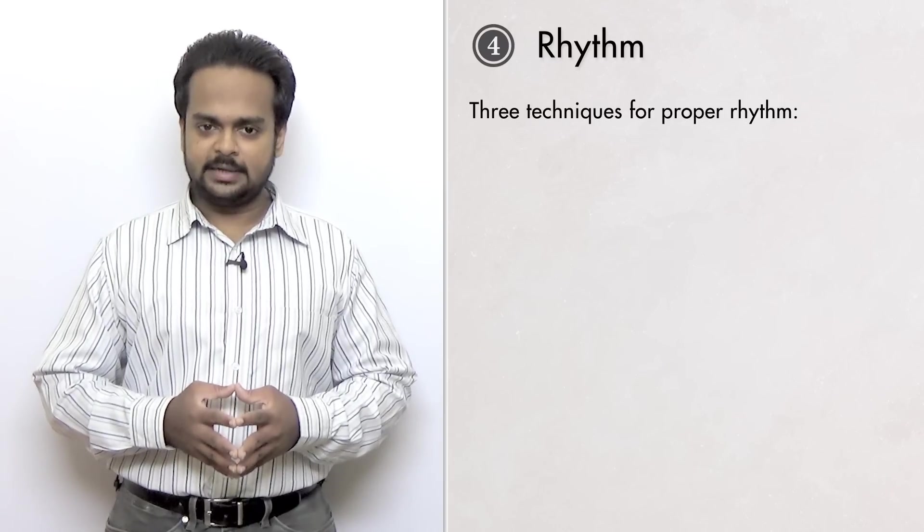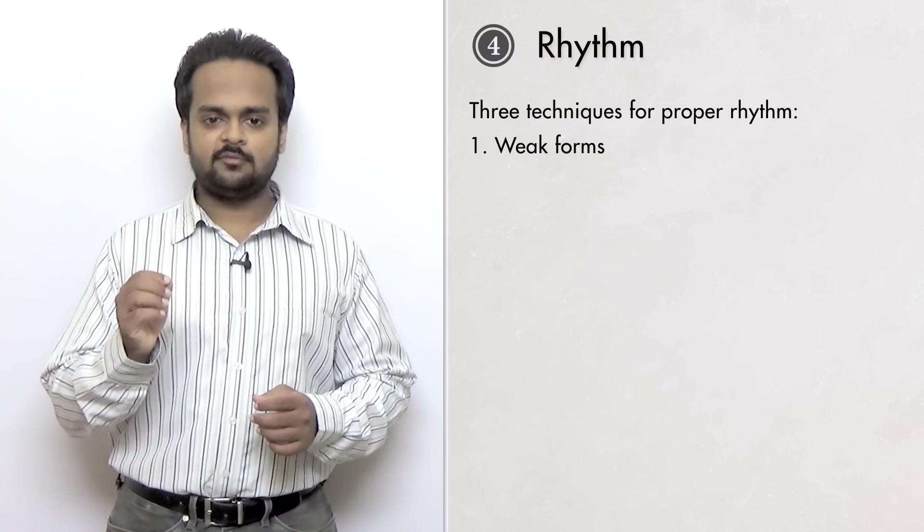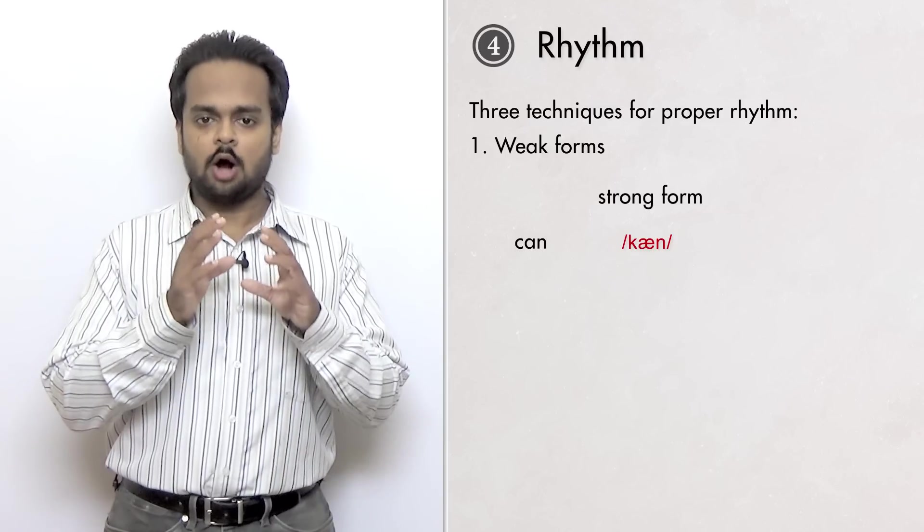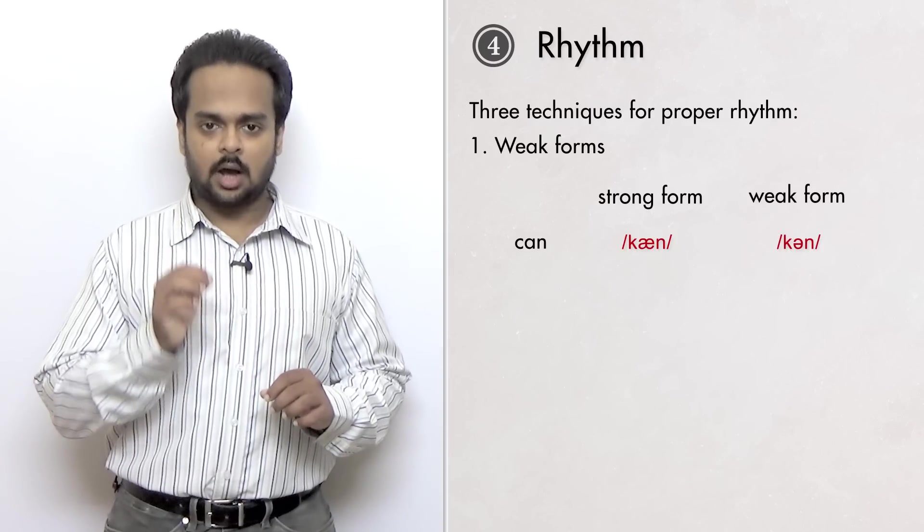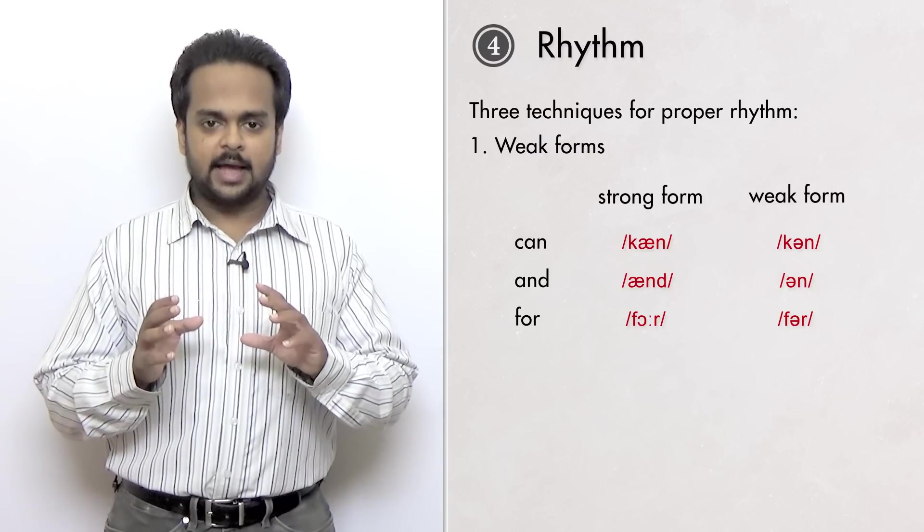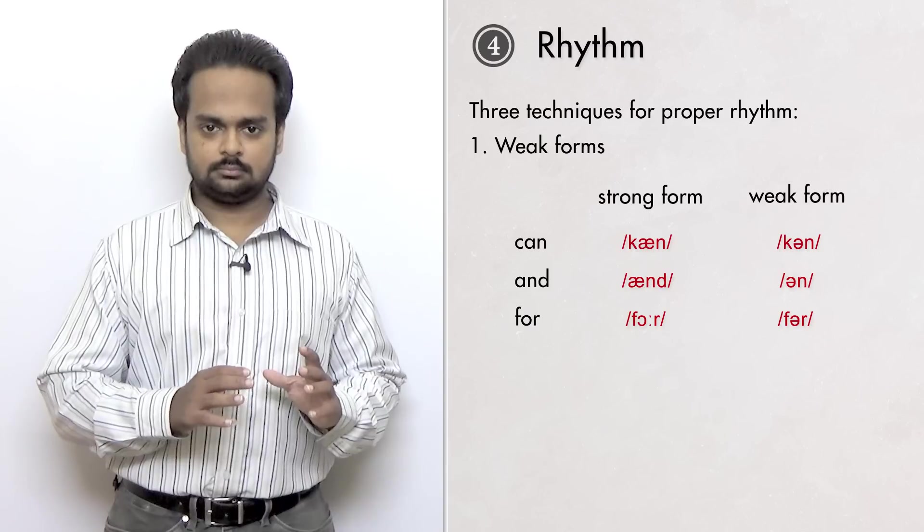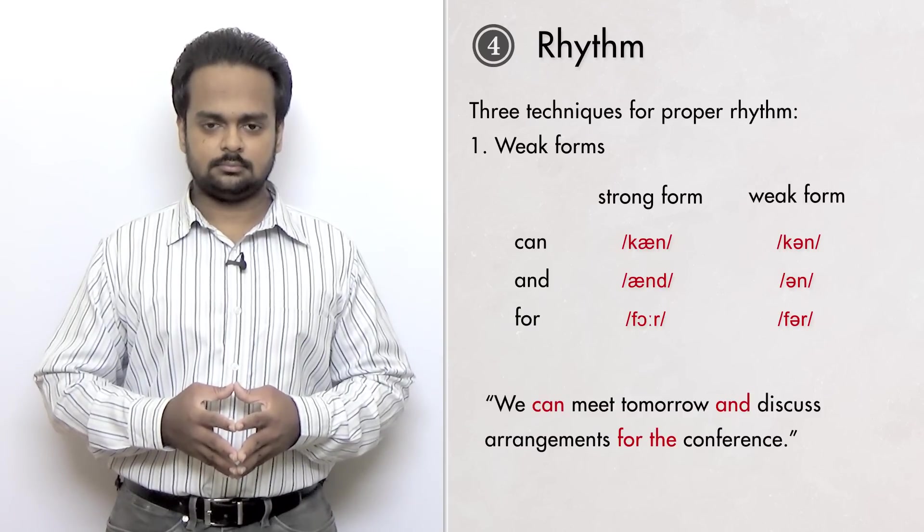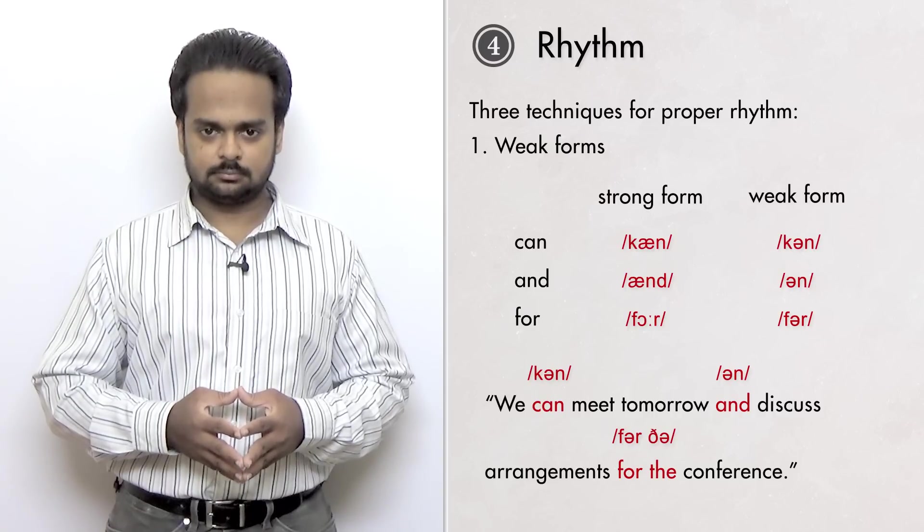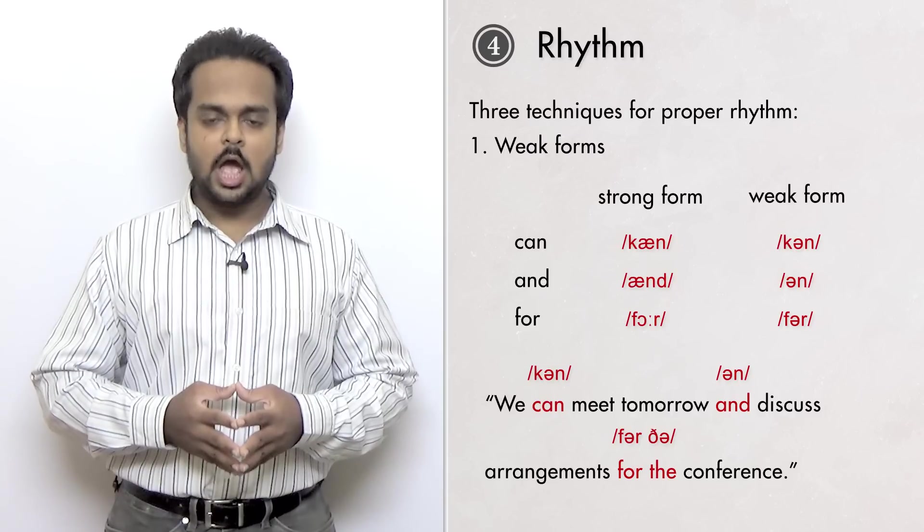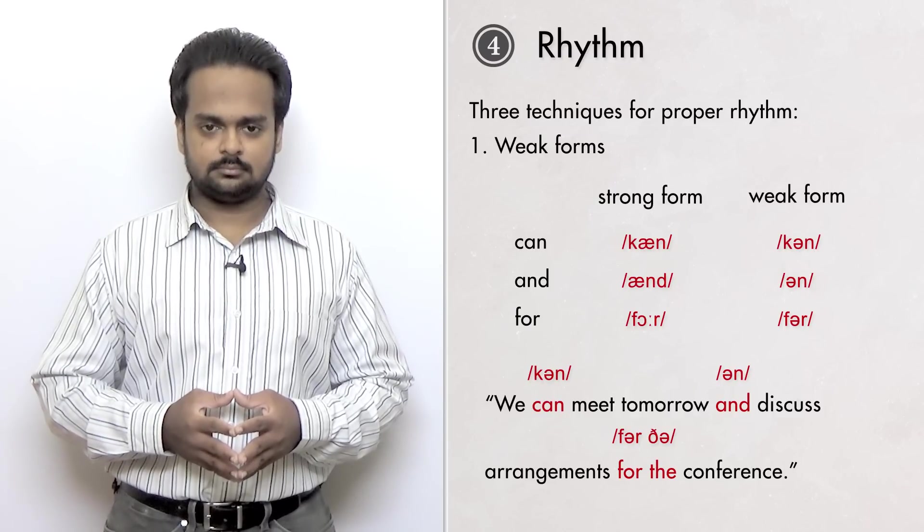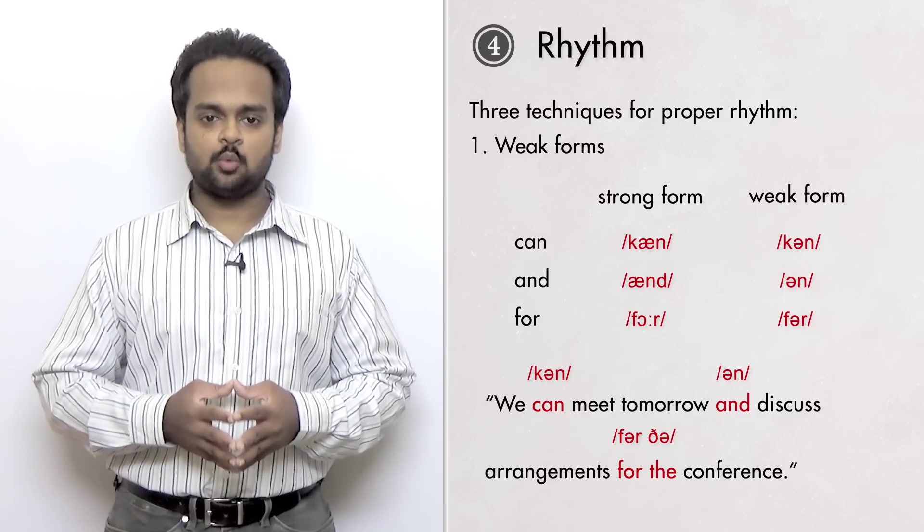To speak with proper rhythm, there are three techniques you can use. The first is to use weak forms of grammar words. For example, this word is can. This pronunciation is called the strong form. But when we say it in a sentence, we say can. That's the weak form. And becomes un. For becomes fur. Weak forms help us to say grammar words quickly and easily. Here's a sentence. How would you say it? Here it is. We can meet tomorrow and discuss arrangements for the conference.